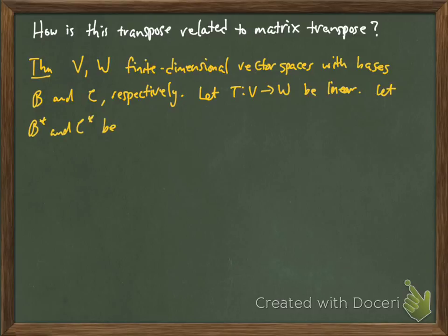And this is going to give us the relationship we want. So suppose T is a linear transformation from V to W. And B star and C star, I'm going to take these to be the dual bases to B and C respectively. So these are composed of the coordinate functions.